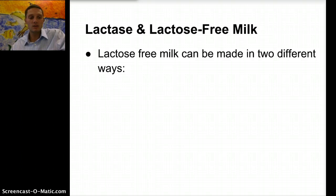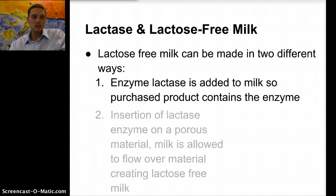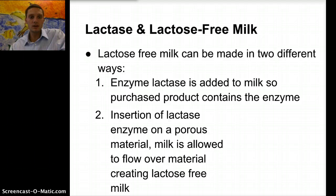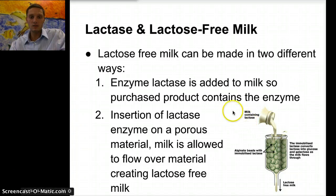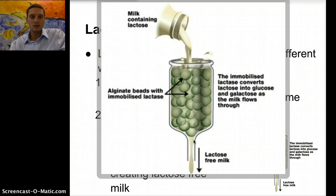Lactose-free milk can be made in two different ways. The first is that enzyme lactase is added directly to the milk so the purchased product contains the enzyme. The other, more common way is to insert lactase enzymes onto a very porous surface that a liquid can flow through, and then you allow milk to flow over that material — this creates milk that has the lactose already broken down. The milk containing lactose is poured through a surface where beads have lactase in them, and what comes out is lactose-free milk.